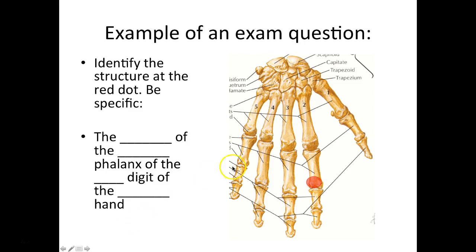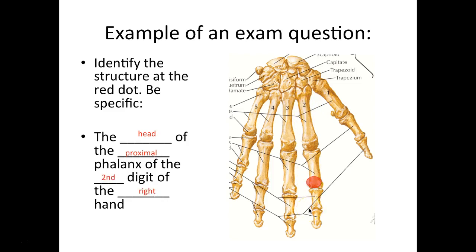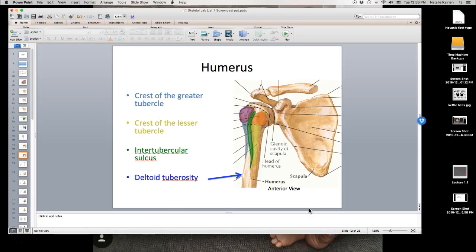On your practical exam at the end of the quarter, I'll have a hand bone with a structure marked, and you'll need to fill in: the blank of the blank phalanx of the blank digit of the blank hand. You always start small and build big — identify base, body, or head first, then proximal/middle/distal, then the digit number, then right or left hand. That is it for your skeletal lab list one screencast. Let me know if you have any questions and I will see you in the cadaver lab on Thursday.